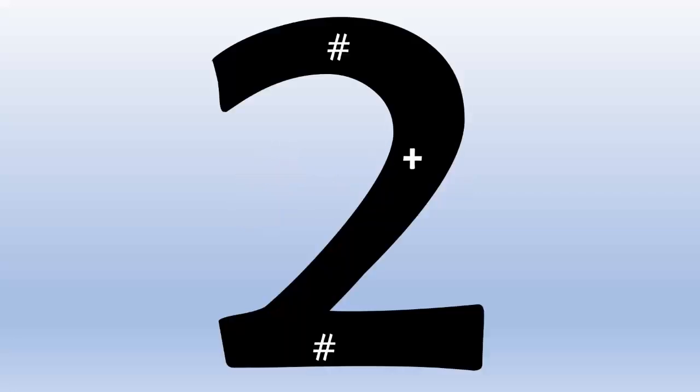When you multiply any number by 2, all you do is add that number to itself. One way to help yourself visualize this is to picture the number symbol at the top and bottom of the number 2, and a plus sign in the middle.